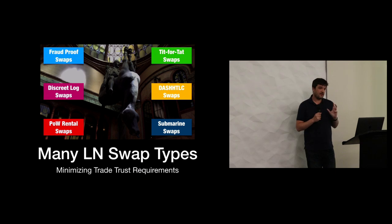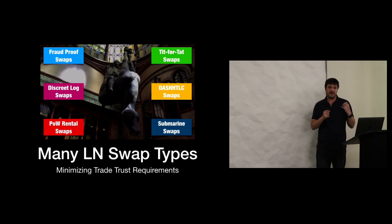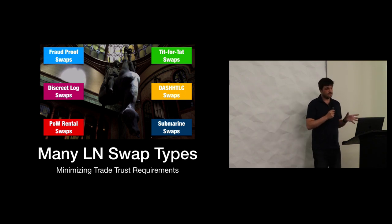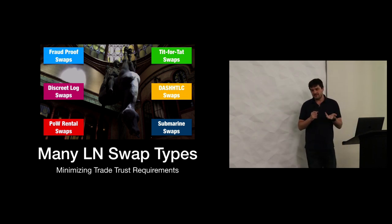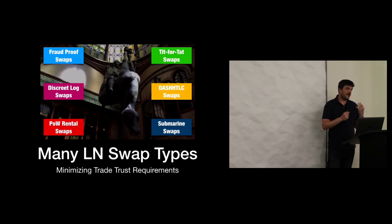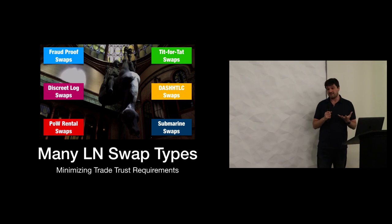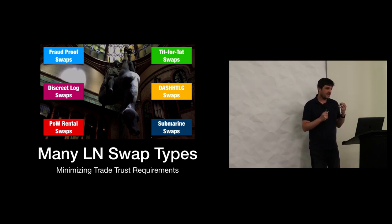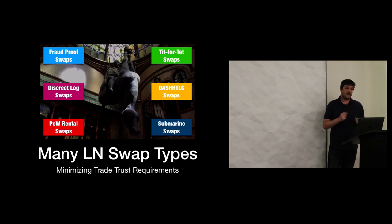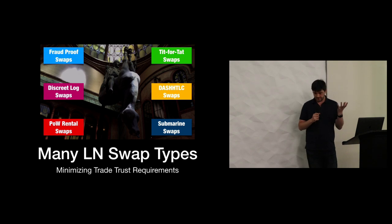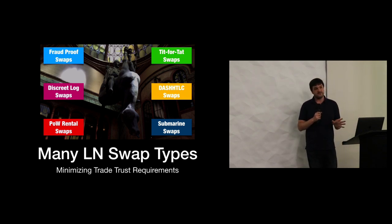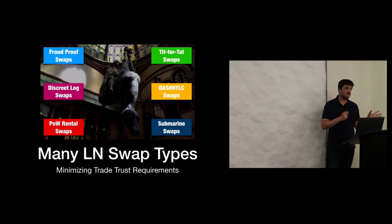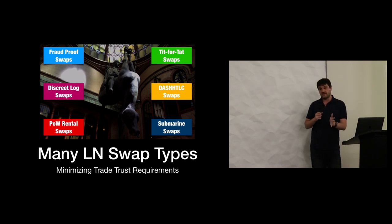Related to that are proof-of-work rental swaps. Say I'm excited about a proof-of-work altcoin and there aren't good exchanges to buy it. I could go to a mining company willing to rent me hash power and hash whatever I tell them. I'll pay them in Bitcoin every minute, and they give me the proceeds of what I'm mining in the other coin. As soon as they stop giving me the proceeds, I stop paying. So I'm only risking a marginal amount.